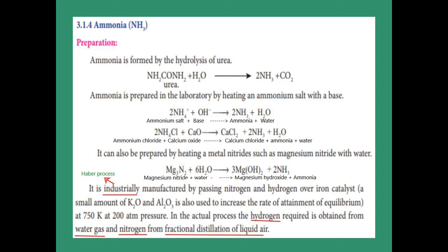The Haber process: 1 mole of nitrogen reacts with 3 moles of hydrogen to give 2 moles of ammonia in the presence of an iron catalyst. A small amount of potassium oxide and aluminum oxide are used as promoters to increase the rate of attainment of equilibrium. The optimum temperature is 750 Kelvin and the pressure is 200 atmospheres. Hydrogen is obtained from water gas, and nitrogen from fractional distillation of liquid air.